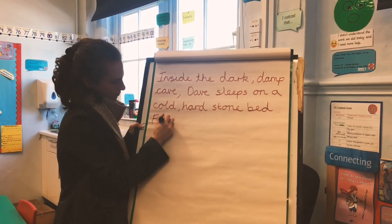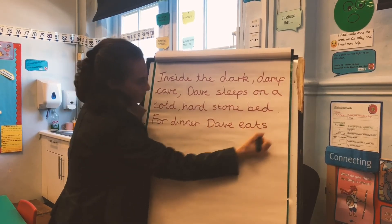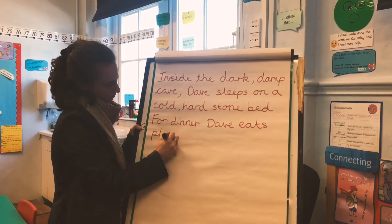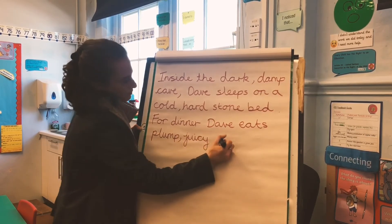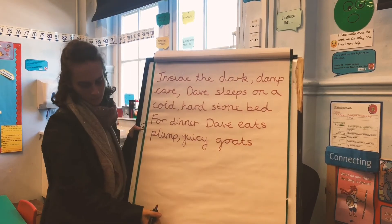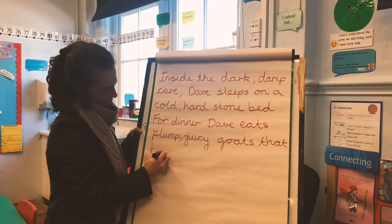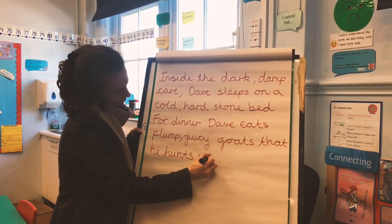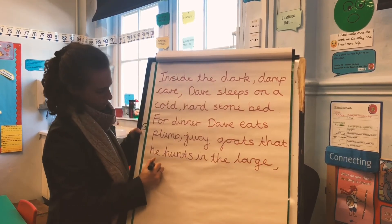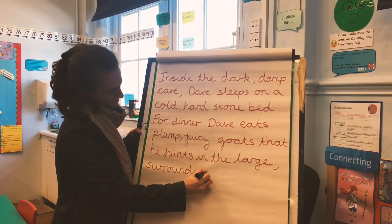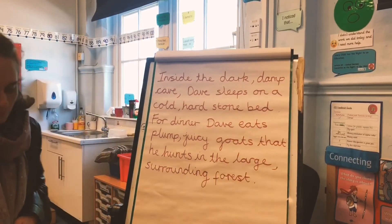Now you're going to use the spider diagram that you were asked to make about Dave's dinner to finish off your description. I decided to use 'plump, juicy goats' in 'the large, surrounding forest,' because that's where I imagined Dave would hunt for his food.